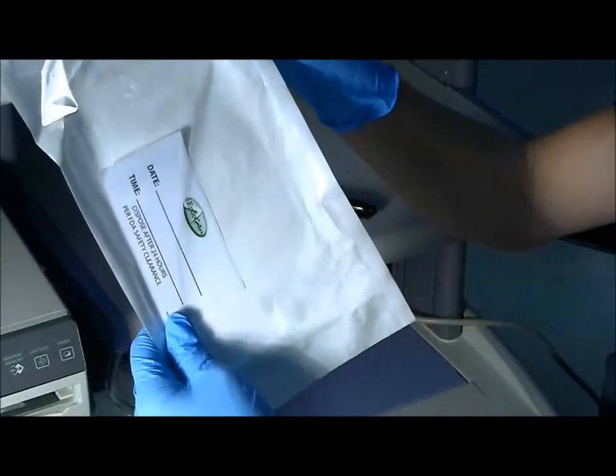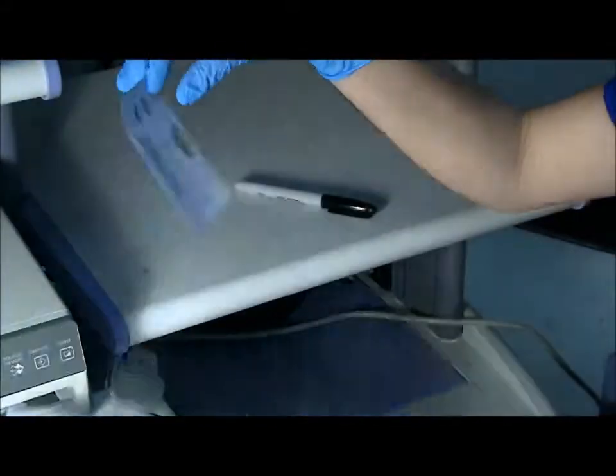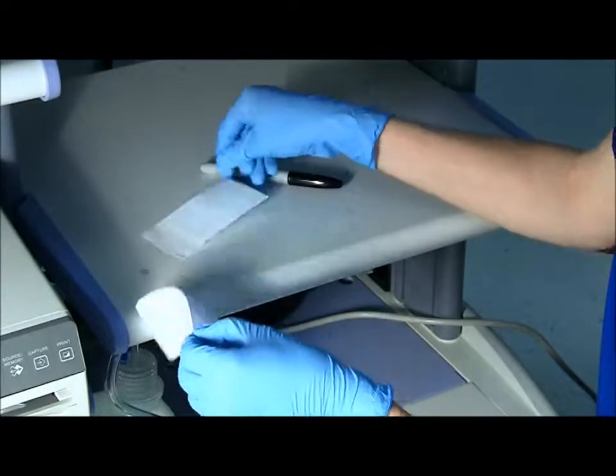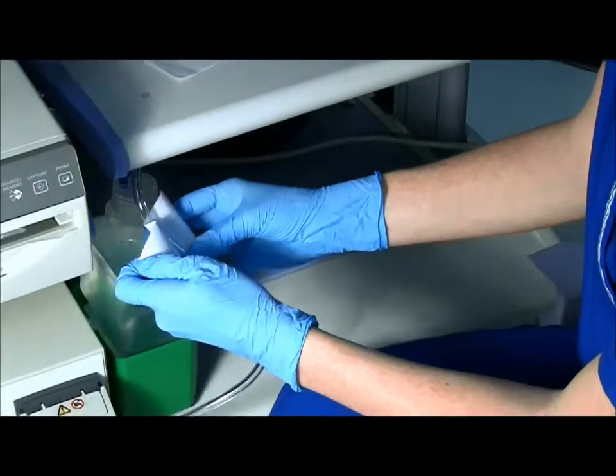Each endogator comes with a date and time sticker in each package. Take the sticker out and fill in the appropriate time and date. Then place the sticker around the endogator tubing.